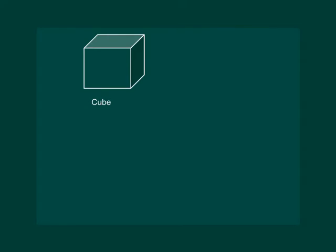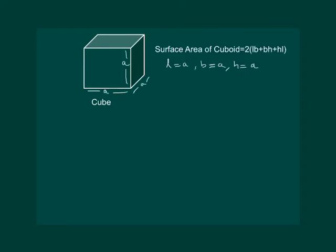Let us now look at a cube. A cube can be defined as a cuboid whose length, breadth and height are all equal. If length, breadth and height are each equal to a, then what will the surface area of the cube be equal to? Let us substitute all the values in the surface area formula of the cuboid. We get 2 times (a² + a² + a²), which is equal to 2 × 3a².